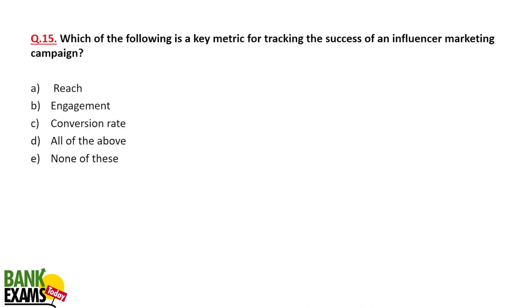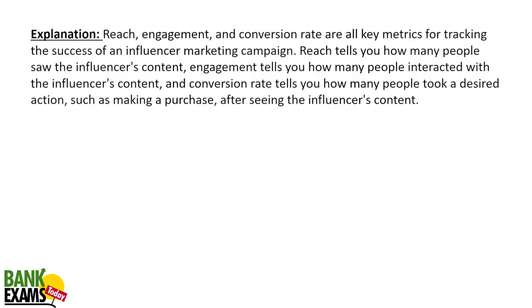Which of the following is the key metric for tracking the success of influencer marketing? This came in last year's exam. When you pay an influencer on social media to promote your products, that is influencer marketing — for example, paying a YouTuber to promote your product. The key metrics are reach, engagement, and conversion rate. You measure actual sales, engagement, how many people saw it, and how many liked or subscribed.